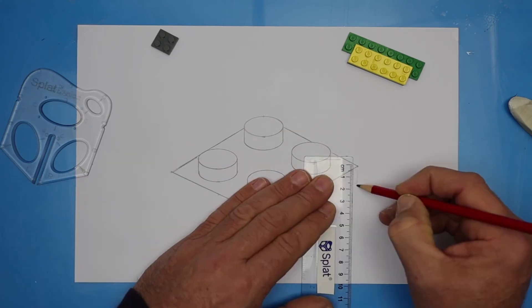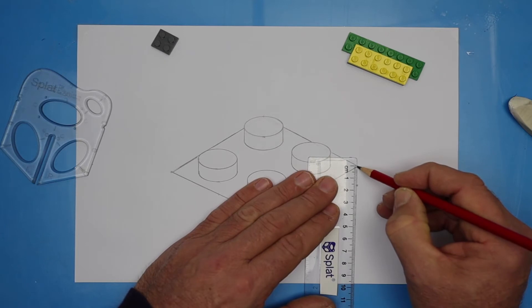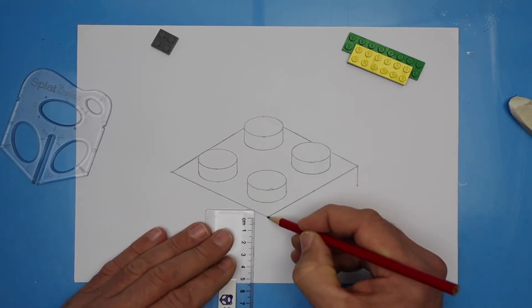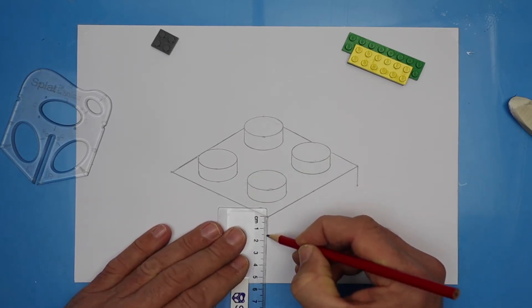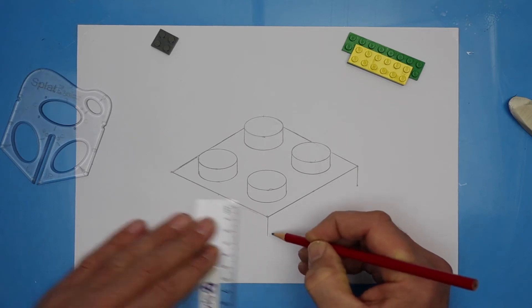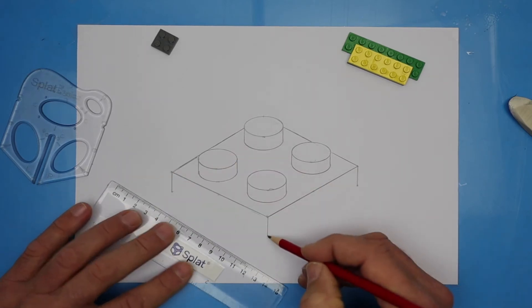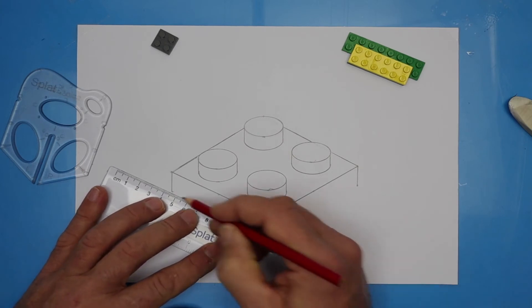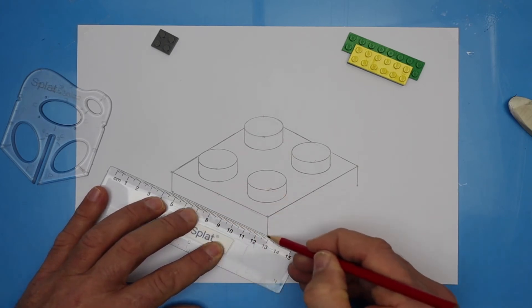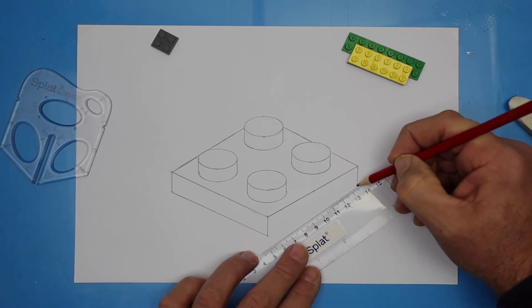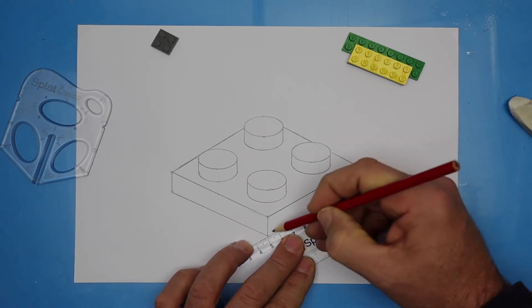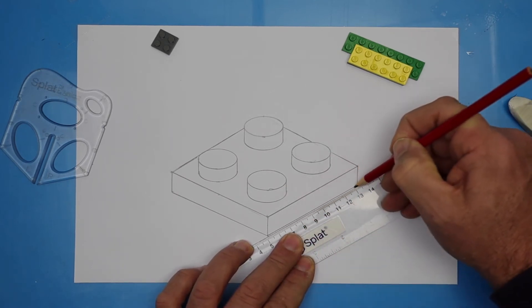Next, we give some thickness to our square prism. So we're dropping down some lines. Let's go 15 millimeters down. So from each corner, drop a line down 15 millimeters and then simply join the dots. And I have a 3D object. This type of drawing is called isometric because both of the sides are sloping away.